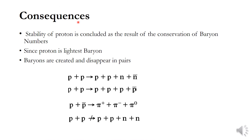A very important and fundamental consequence of baryon number conservation is the stability of the proton. Since the proton is the lightest baryon, it could only decay into lighter particles. But there are no lighter baryons, so the proton cannot decay without violating baryon number conservation. That is why the proton is completely stable.